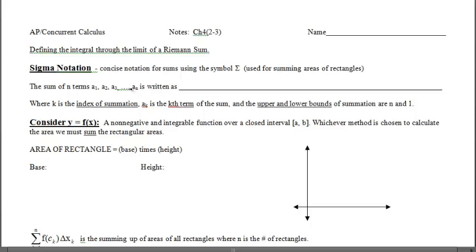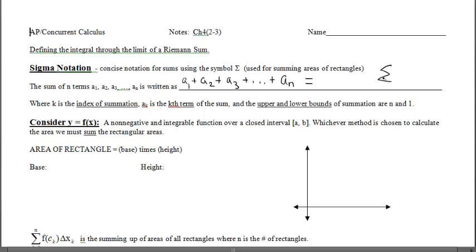If you think about what we've been doing, we've been finding areas of rectangles and summing them. If we have a whole bunch of rectangles and want to sum the areas, instead of writing out a-sub-1 plus a-sub-2 — where a represents the area of rectangle 1, rectangle 2, etc. — plus a-sub-n, we can represent that sum using sigma notation.